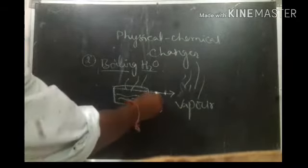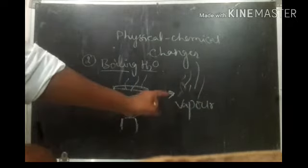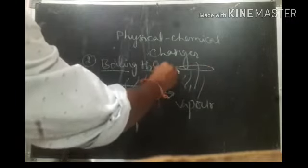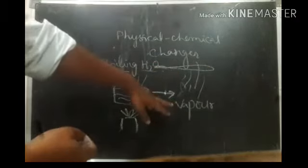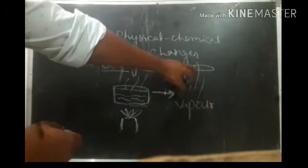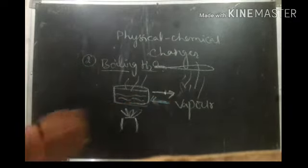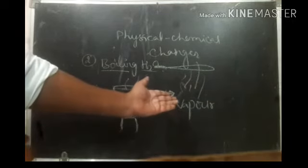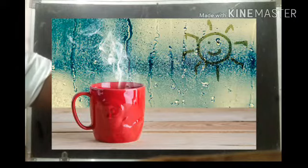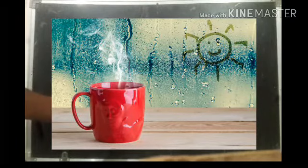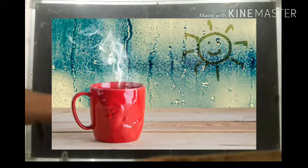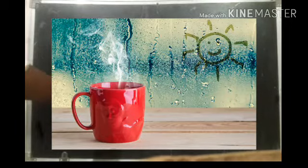Now if you keep a pan over the vapor, the vapor sticks to the pan, cools down, and becomes water again. So it is a temporary, reversible change — the liquid water temporarily becomes gaseous vapor, and when it cools down the vapor becomes water again.